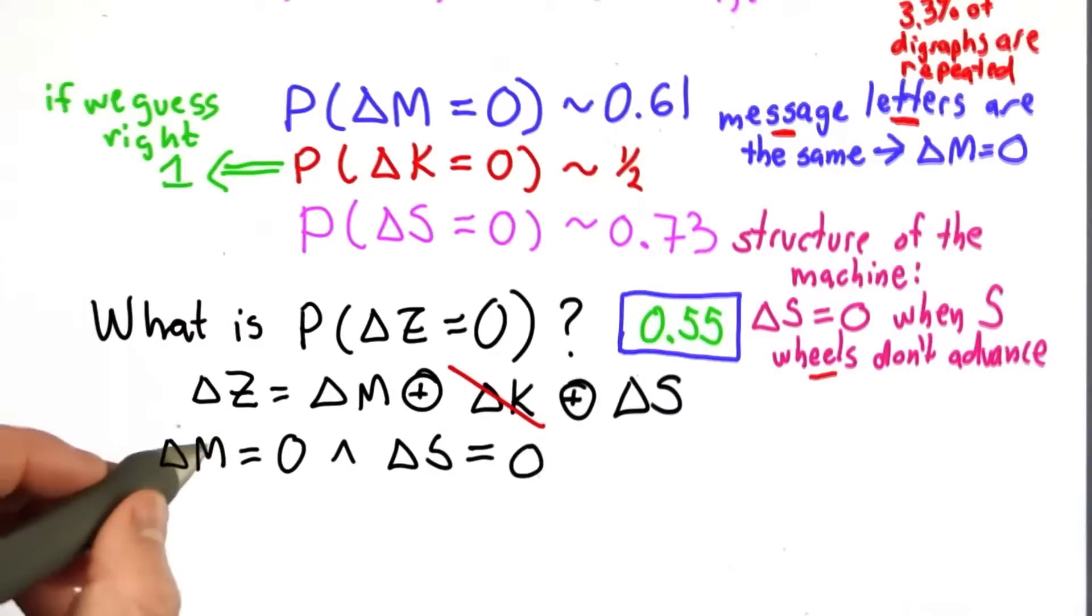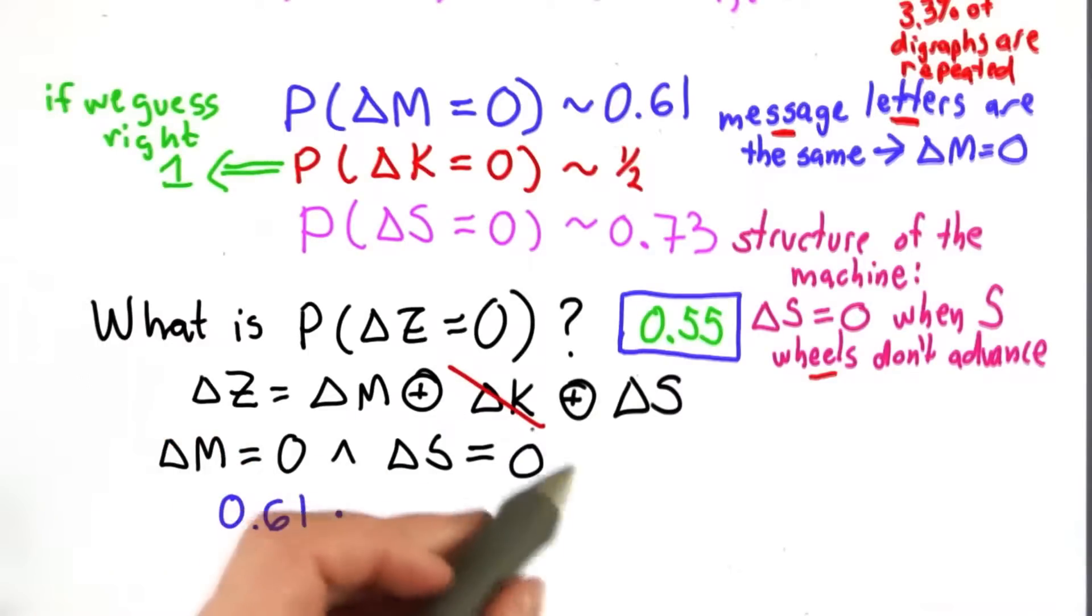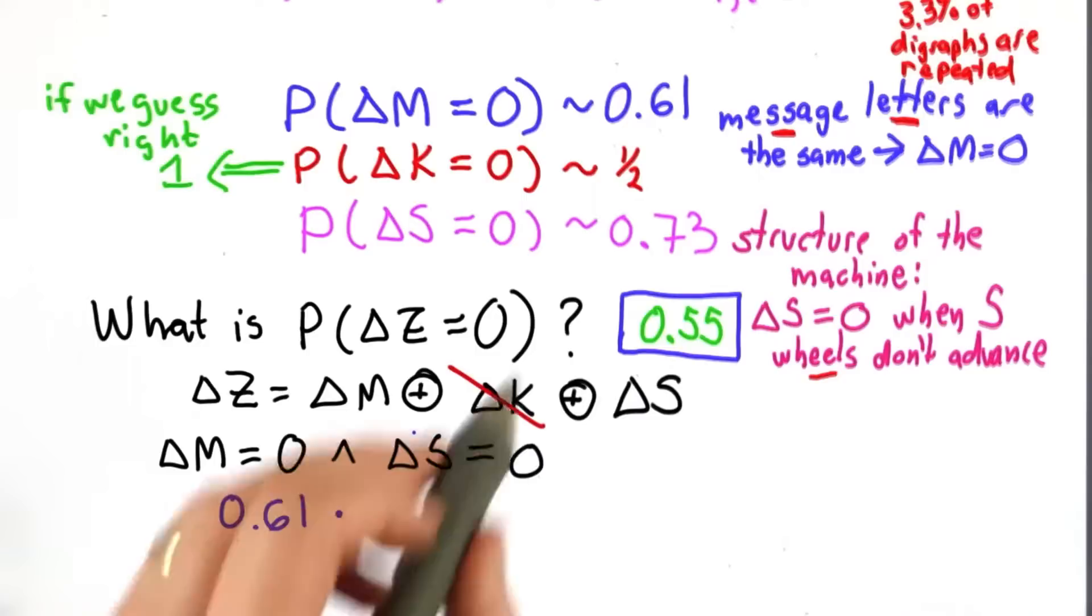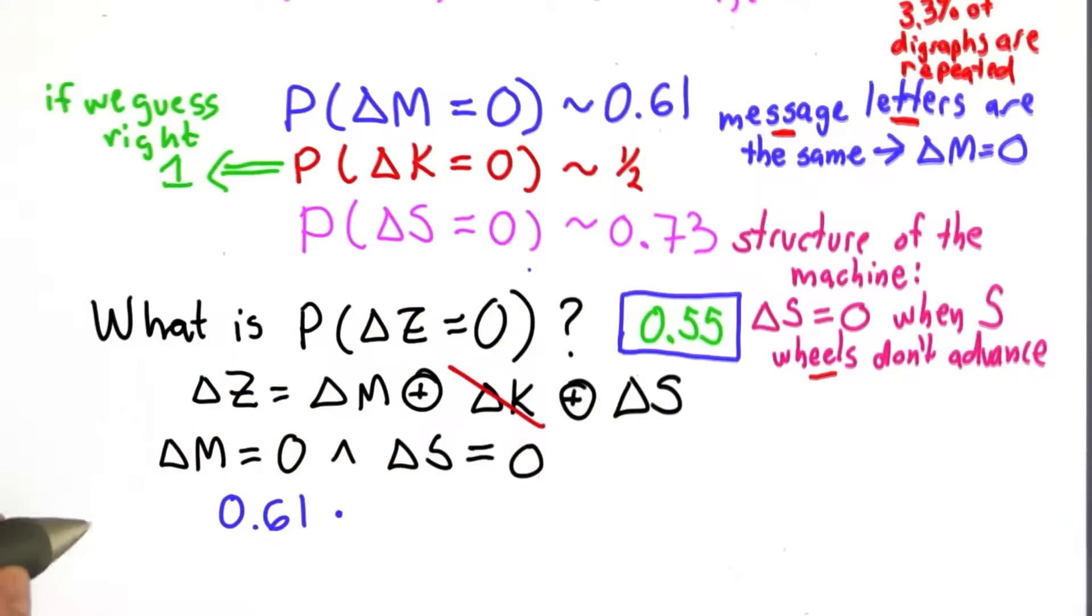The probability that delta M is 0, we know that. That's 0.61. And we're going to multiply that by the probability that delta S is 0, which we know is 0.73.